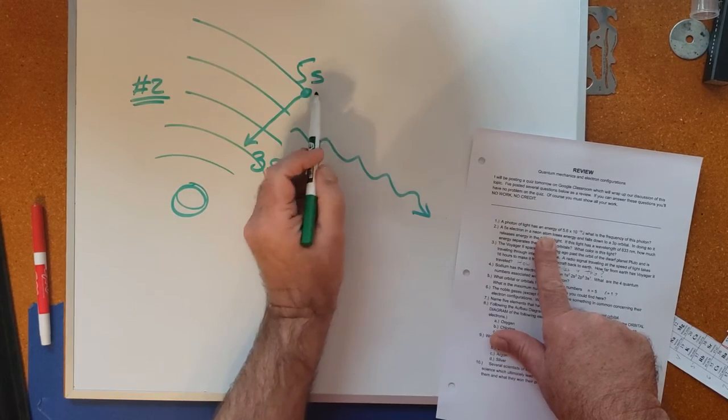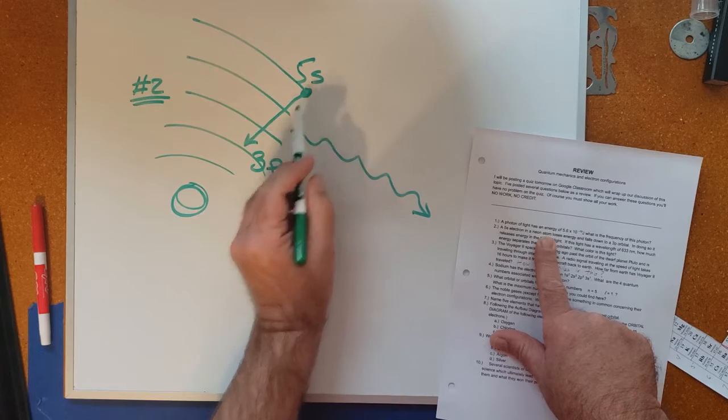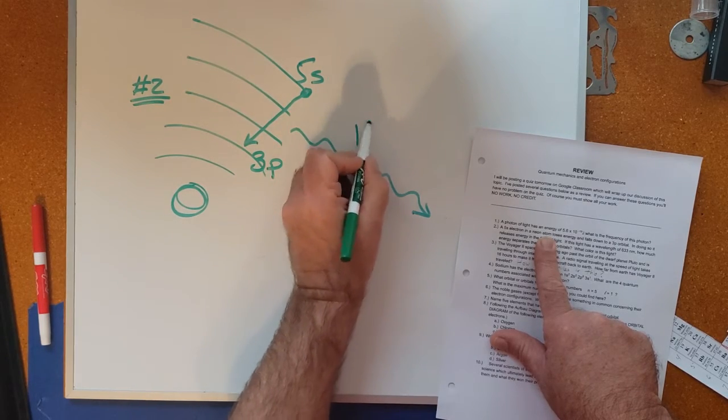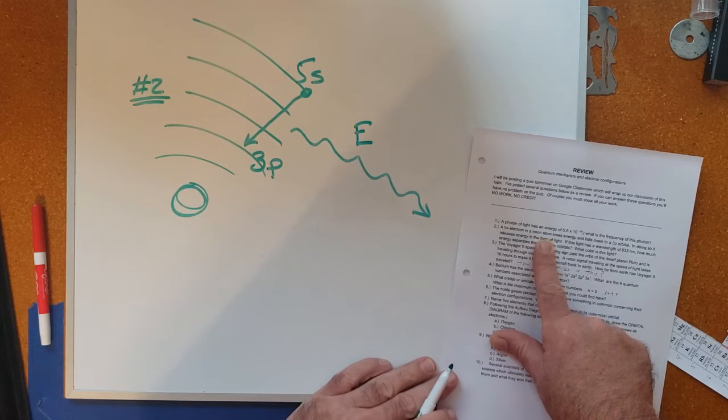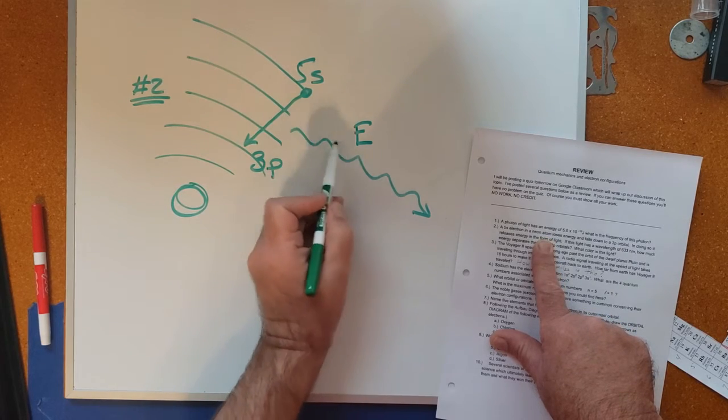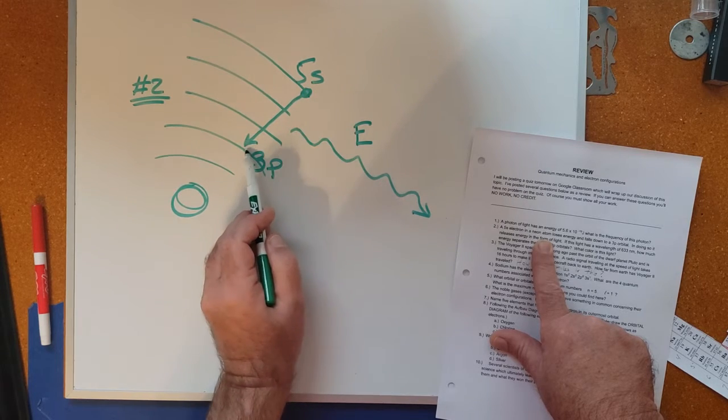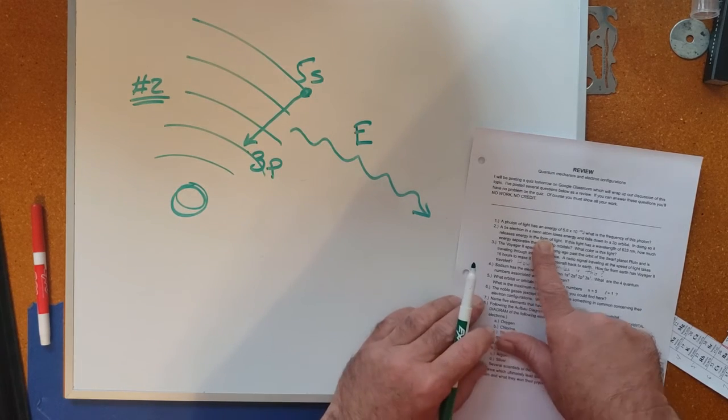The higher the orbital the more energy, so if you want to go to a lower orbital you have to release this energy to get down there, and that energy is released in the form of light. The energy of this light photon is exactly equal to the difference in energy between these two orbitals.